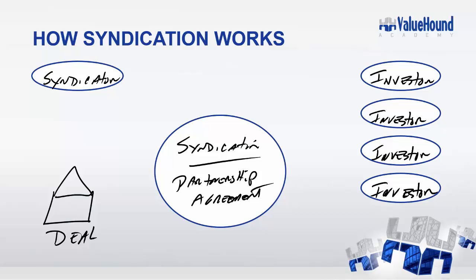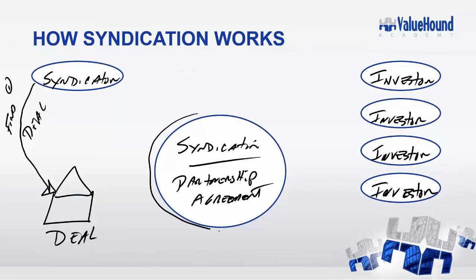Those are the players of the game. Now let's talk about the process. As the syndicator, you're out in the marketplace and you come across a great deal. Step one is you're going to find the deal — you're already out in the marketplace anyway. Once you find the deal, you're going to create your syndication.